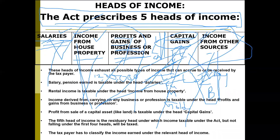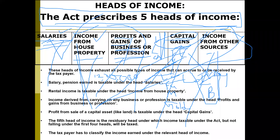These are the five heads of income. A person's income can be included only under these five heads, not more than that. Tomorrow I will ask everybody these five heads of income — everybody should be able to tell me. If you are unable to answer tomorrow, I will make you get out of my class. Even if I ask you in your dream, you should be able to answer me.